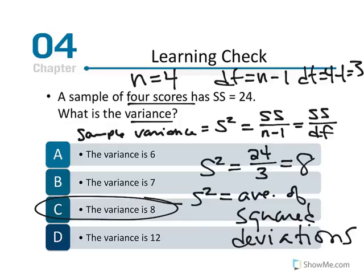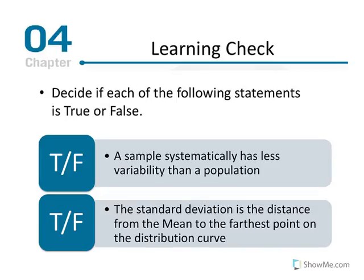These are the types of questions you'll encounter — given variables in word format or notation, solve for a statistic reflecting variability. True or false: the sample systematically has less variability than a population. That is true. Samples come from the population and tend to have less variation than the population. We mathematically correct for this when using sample statistics to estimate populations by dividing by a smaller number to inflate the quotient.